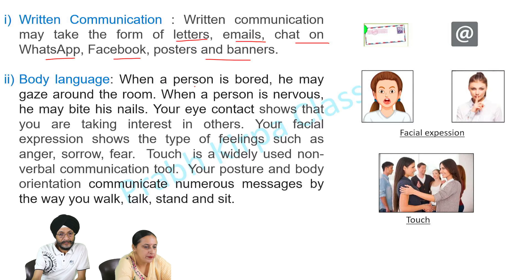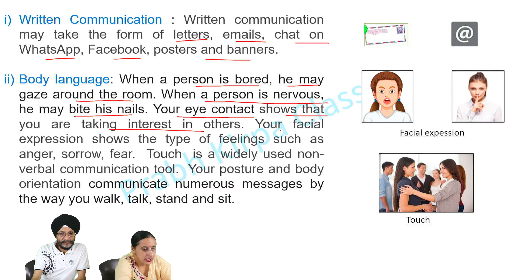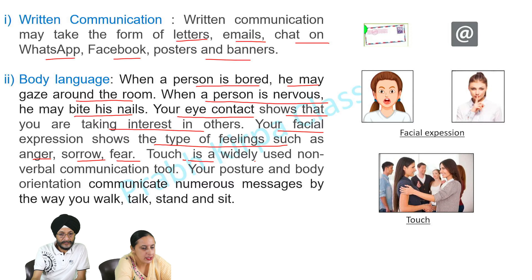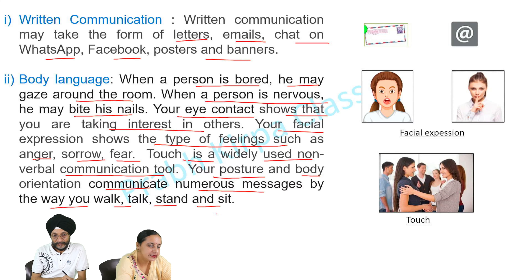Number two, Body Language. When a person is bored, he may gaze around the room. When a person is nervous, he may bite his nails. Eye contact shows that you are taking interest in others. Facial expressions show the type of feelings such as anger, sorrow, and fear — that is a widely used non-verbal communication tool. Your posture and body orientation communicate numerous messages by the way you walk, talk, stand, and sit.